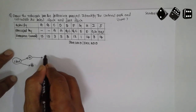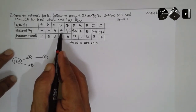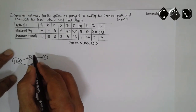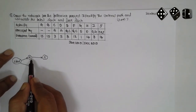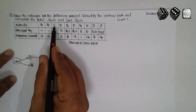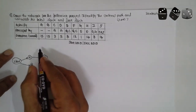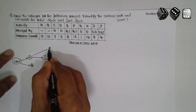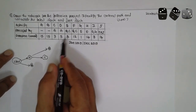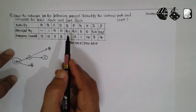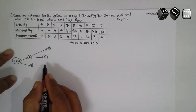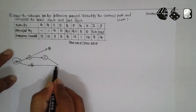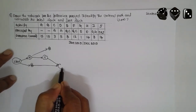Write C. At the end of A, D is there. Write D here. At the end of B and C, E is there.